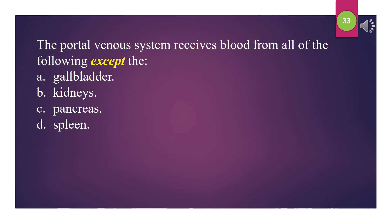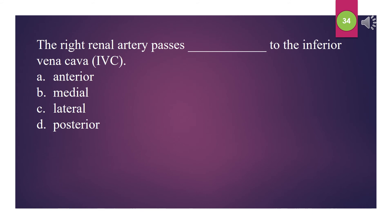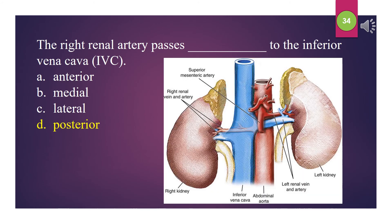The portal venous system receives blood from all of the following except: A. Gallbladder. B. Kidneys. C. Pancreas. D. Spleen. The answer is B: Kidneys. The right renal artery passes blank to the inferior vena cava (IVC): A. Anterior. B. Medial. C. Lateral. D. Posterior. The answer is D: Posterior.